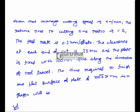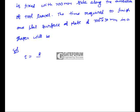Given: average cutting speed = 9 m/min, return time to cutting time ratio = 1:2, feed rate = 0.3 mm/stroke, clearance at each end = 25 mm, plate is 700 mm along the direction of tool travel and 30 mm wide. Find the time required to finish machining one flat surface of the plate in a shaper.